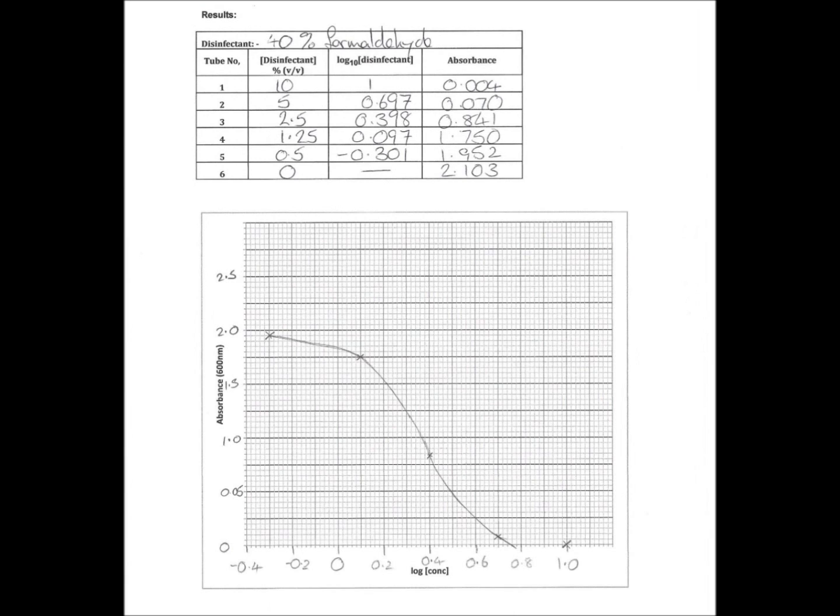So I've plotted my points and I've hand-drawn a line of best fit between the points. A couple of things you should notice: first of all, I haven't joined the point with the highest concentration to the y-axis. Essentially, you don't know what happens with higher concentrations, and so just leave the gap.